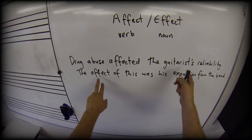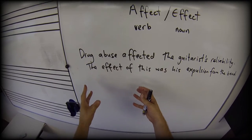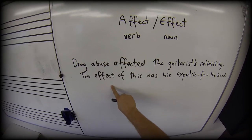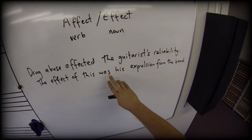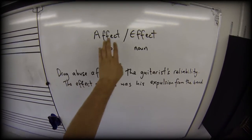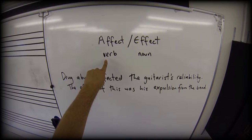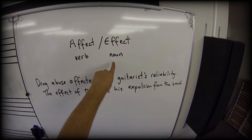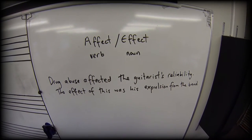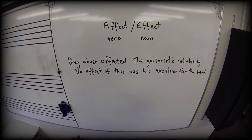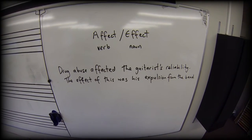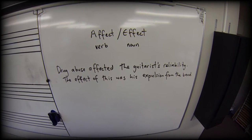The effect — that's the passive result of what the drug abuse was doing, so it's a noun. 'The effect of this was his expulsion from the band.' If you want to know the exceptions to these — affect being almost always a verb, effect almost always a noun — I would just say look them up, because the usage that will crop up time and time again is this usage, and that's the one you want to get right first before you go for the exceptions.